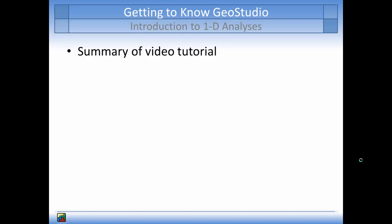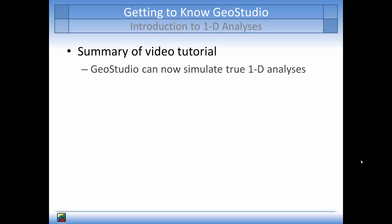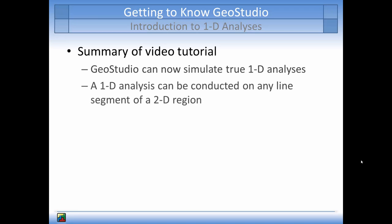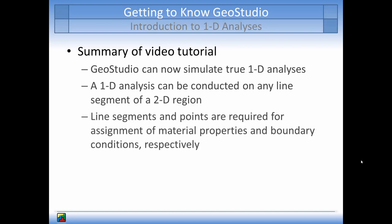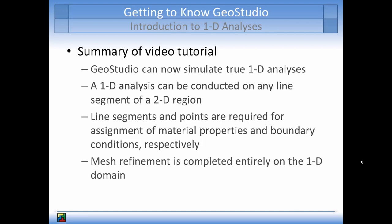To summarize, in version 9 of GeoStudio, a true one-dimensional analysis can be simulated instead of the pseudo one-dimensional analysis of previous versions. This means that a one-dimensional analysis can be conducted along any line of a two-dimensional domain. When conducting a one-dimensional analysis, the use of line segments and points are required for assigning material properties and boundary conditions, respectively. The mesh refinement is conducted entirely on the one-dimensional domain, with the element width and out-of-plane dimension implicitly set to one unit.